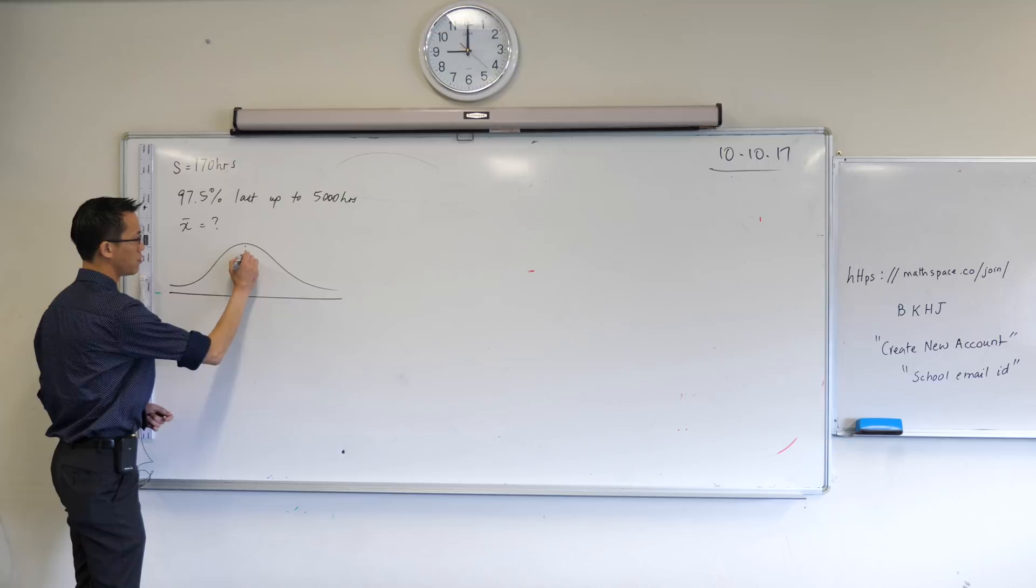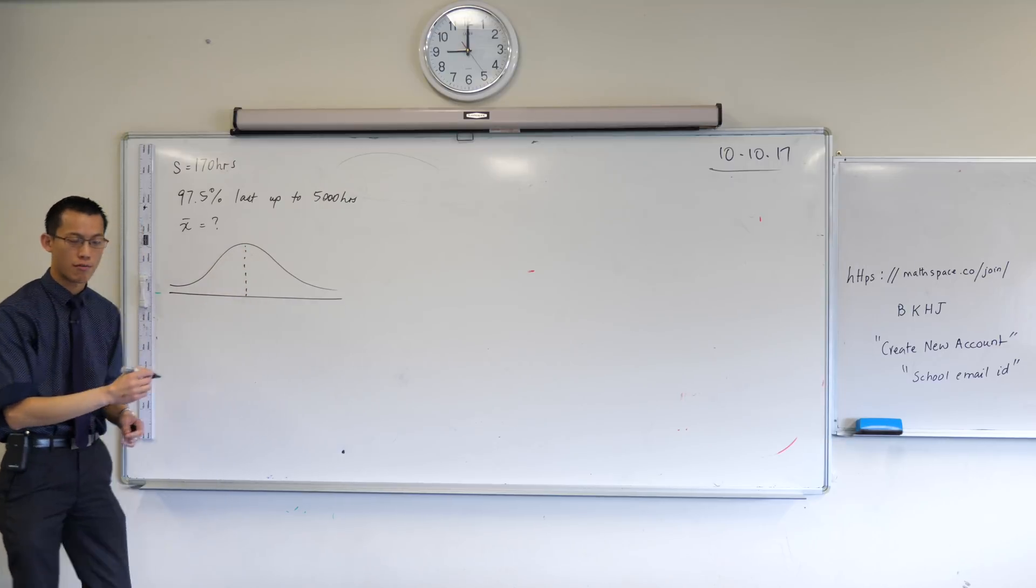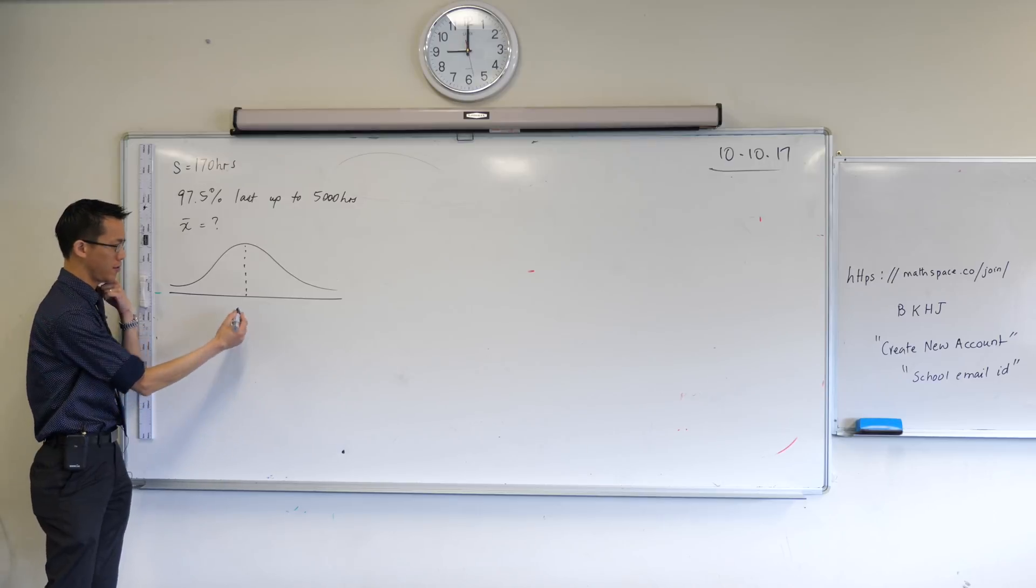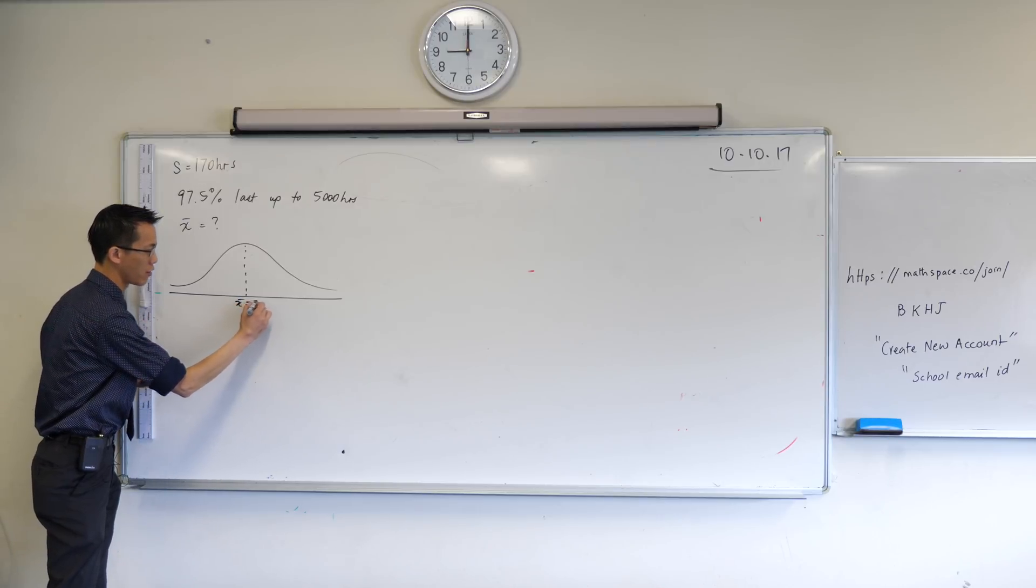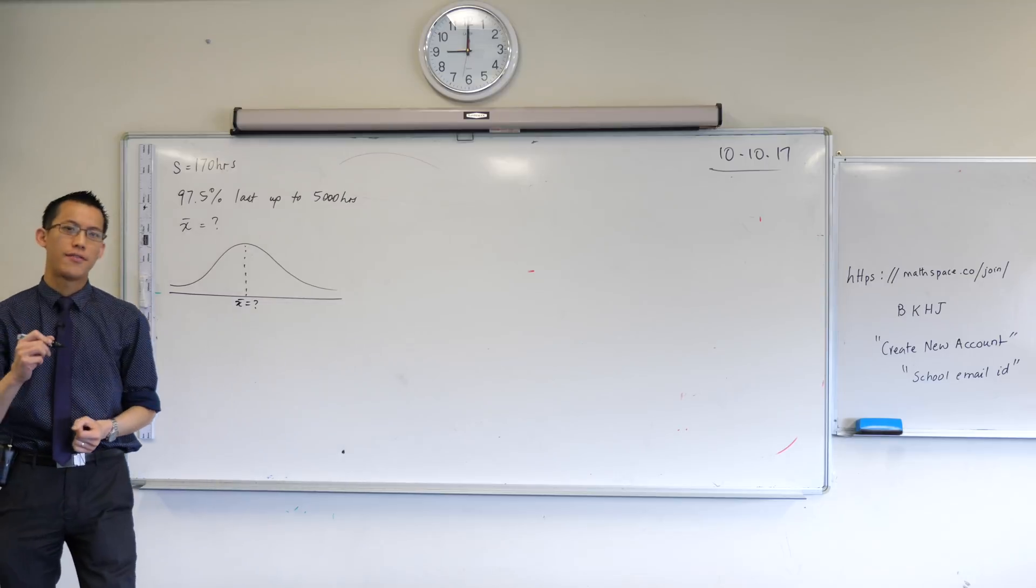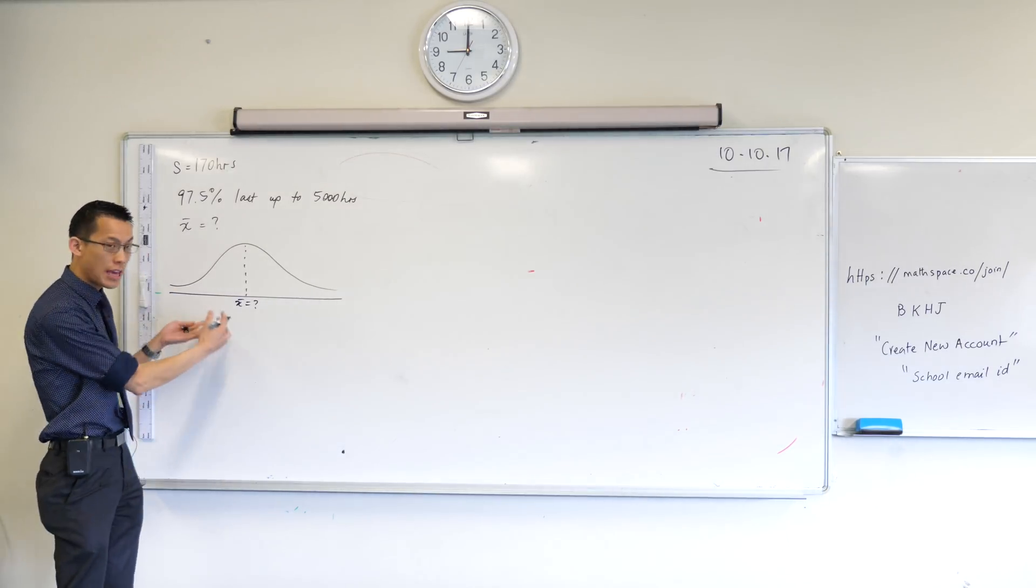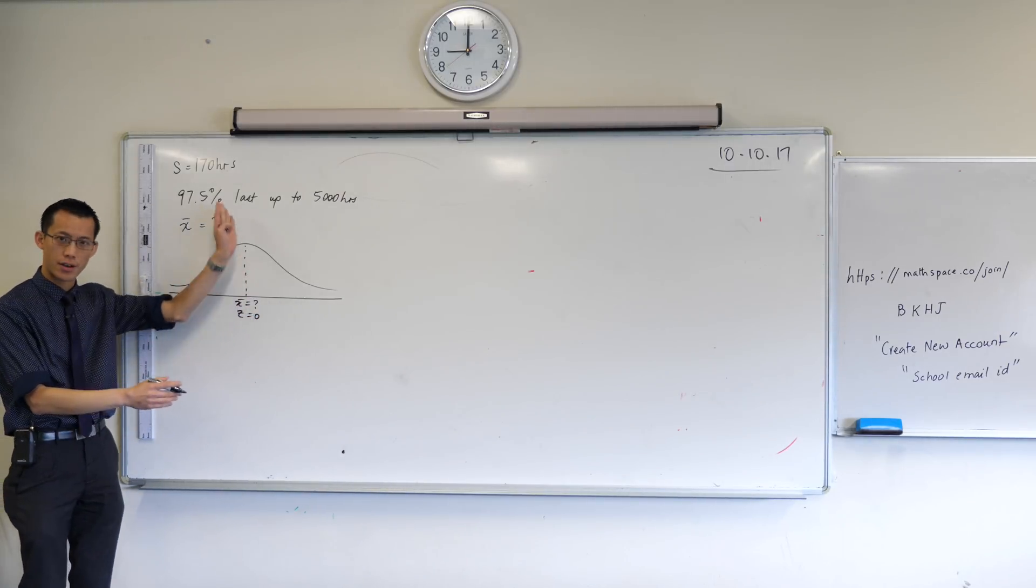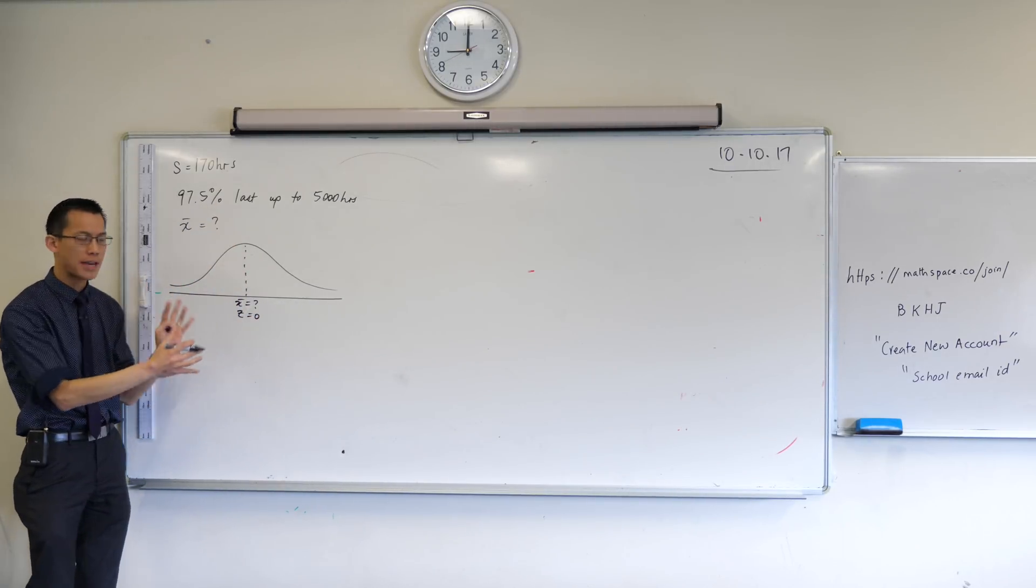We've got the middle of the normal distribution right here, and what's relevant about the middle for us—this average which we don't know—but we do know that whatever the average is, it has a z-score of zero. That's what the middle of the distribution means.